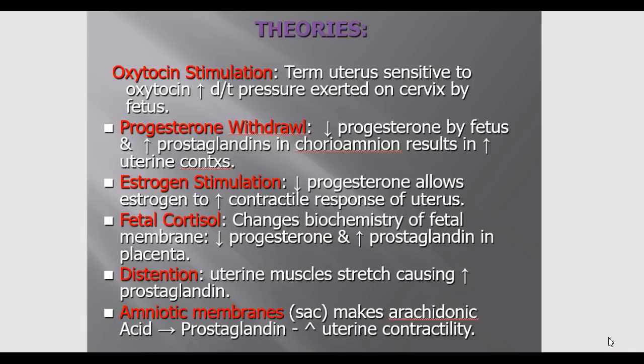The fetal cortisol theory, also called the fetal steroidal theory, involves changes in the biochemistry of the fetal membrane causing a decrease in progesterone and an increase in prostaglandins in the placenta. Prostaglandins increase uterine contractility and cause the cervix to soften. Additionally, as pregnancy progresses, uterine muscles become stretched, increasing the release of prostaglandins. The amniotic sac also makes an acid that is a precursor to prostaglandin, further increasing uterine contractility.